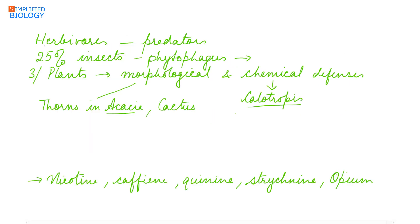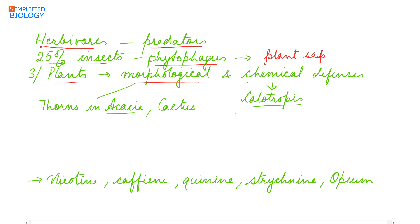As herbivores are also predators, and 25% of insects are phytophagous — meaning they feed on plant sap — plants also develop morphological defense mechanisms to protect themselves. Examples include thorns in acacia and cactus, which are formed to protect them from grazing animals, as predation on these thorns causes physical pain to the predators.